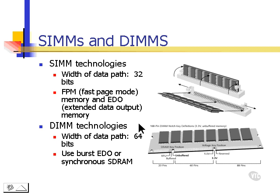DIMM technologies — DIMM stands for dual inline memory module — and it has a 64-bit path. In other words, it's like a 64-lane highway for data versus a 32-lane highway, and it uses burst EDO or synchronous dynamic RAM technology.